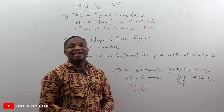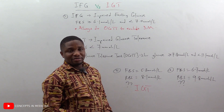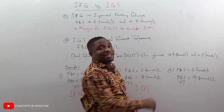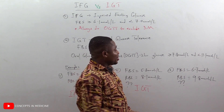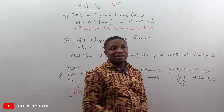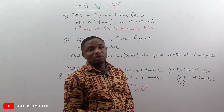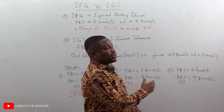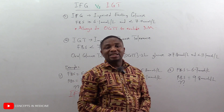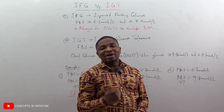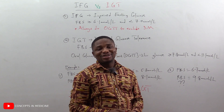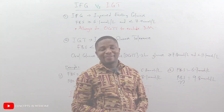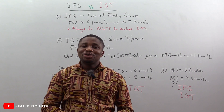The last example: fasting blood sugar 6.7 mmol/L and random blood sugar — that is the OGTT two-hour glucose — 9.8 mmol/L. Take a few seconds to provide your answer before we look at the solution.